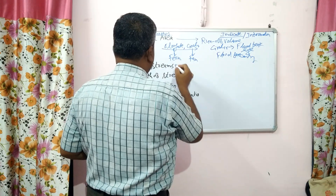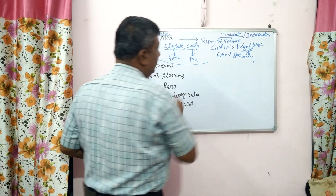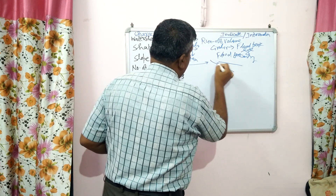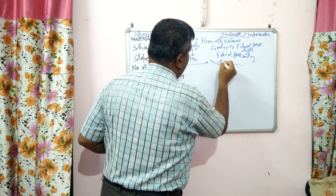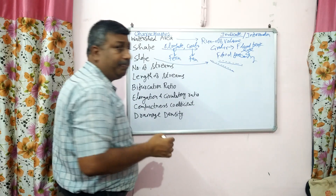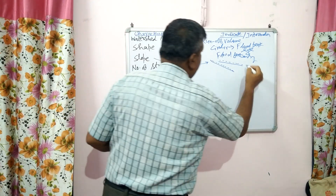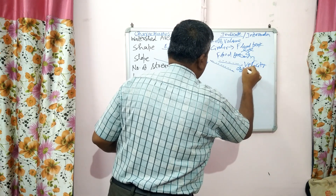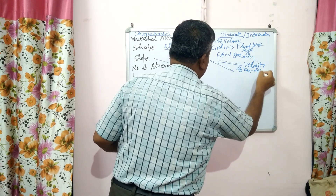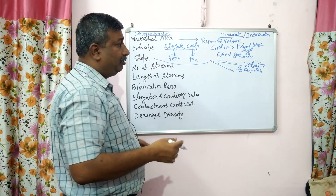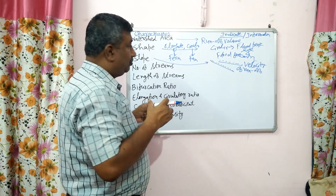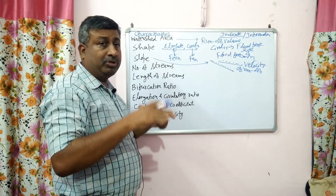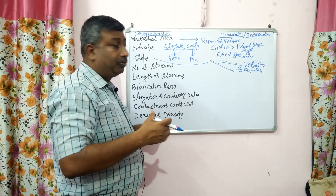Then slope — slope is directly related with velocity. In high slope areas, velocity of water will be more; in low slope areas, velocity of water will be less. Slope indicates the velocity of runoff. If velocity of runoff is more, it will definitely cause more erosion and more disturbance. So in high slope areas like hilly and mountain areas, there is more soil erosion and even landslides, causing land degradation.